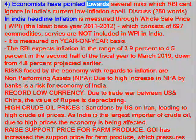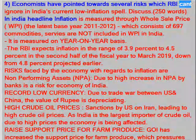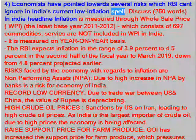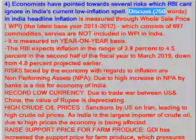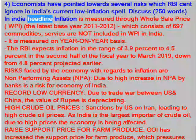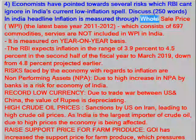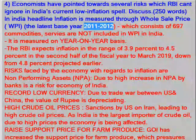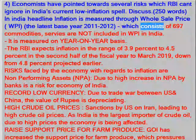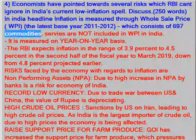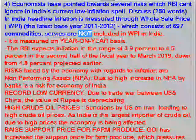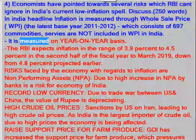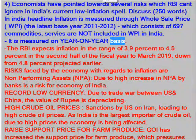Economists have pointed towards several risks which are iconic in India's current low inflation spell. Discuss. (250 words) In India, headline inflation is measured through the Wholesale Price Index (WPI), with the latest base year of 2011-2012, which consists of 697 commodities. Services are not included in WPI in India. It is measured on a year-on-year basis.